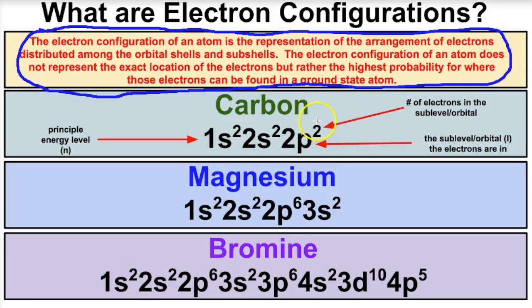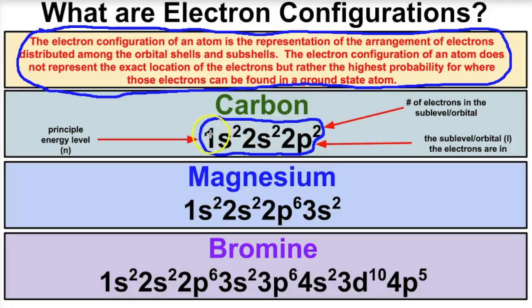For a ground state atom — for example, carbon — carbon has six electrons. So where do those six electrons have the highest probability of being in the electron cloud? Looking at the electron configuration of carbon, let's break it down. The little coefficients — the one here, the two here, and the two here — represent the ring or principal energy level. Right outside the nucleus is the first energy level, and the second coefficient represents the second energy level.